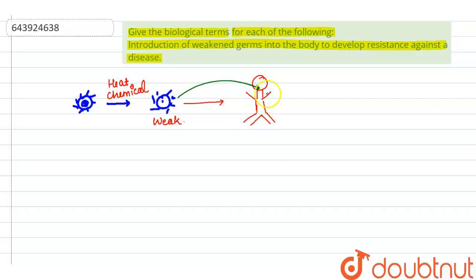Now when the weakened pathogen is introduced, so weakened pathogen is inside the body. Since it is weak, it will not cause disease. But it is alive, so since it is a foreign substance, our immune system...